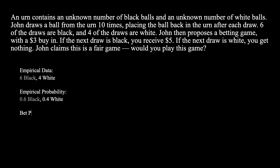We also know the bet payoffs. Since the buy-in is $3 and the payout is $5 if we draw black, black gives us a +$2 payoff. We don't get anything back if we draw white, so white has a -$3 payoff. With the probabilities and the payoffs, we can find the expected value of the bet: 2 times 0.6 minus 3 times 0.4 gives us 0.